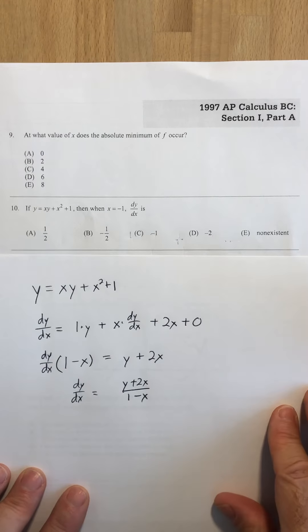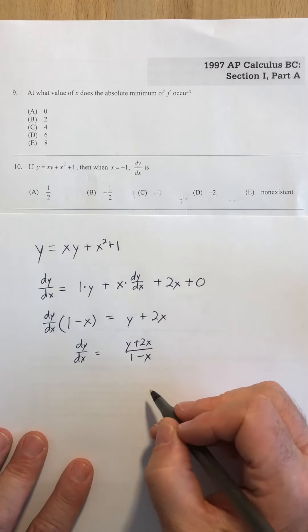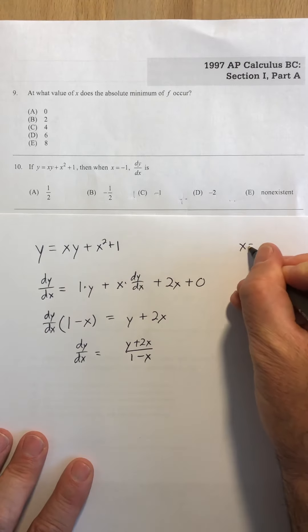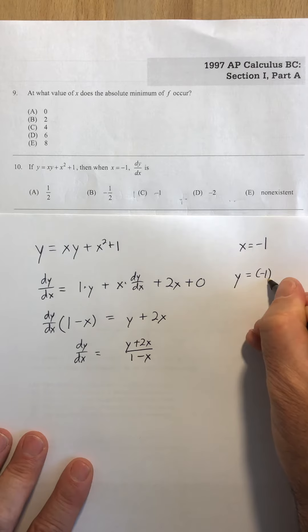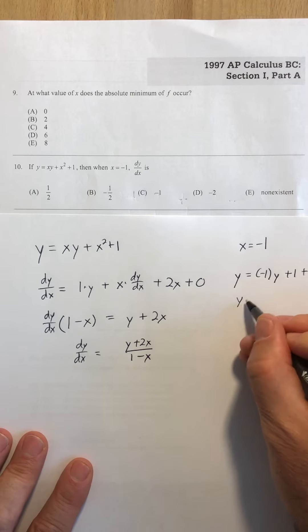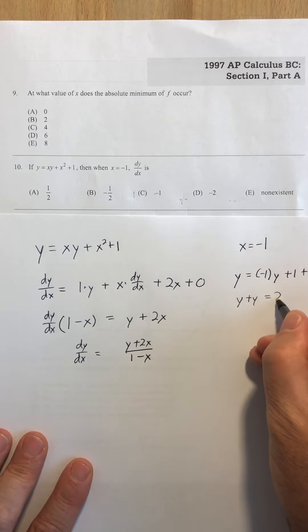My derivative expression has both x's and y's in it. All I was given here was an x value of negative 1, so I also have to figure out the y that corresponds to an x value of negative 1. That's a little side problem. y plus y equals 2, 2y equals 2, y equals 1.